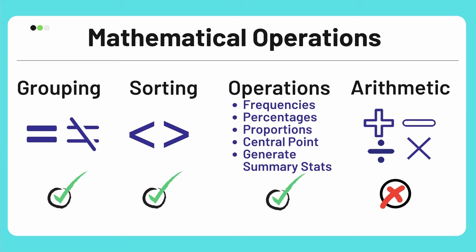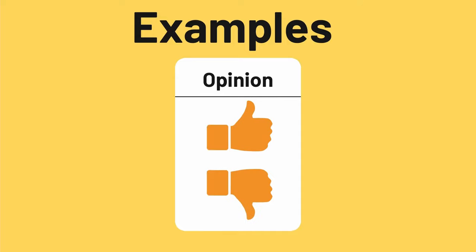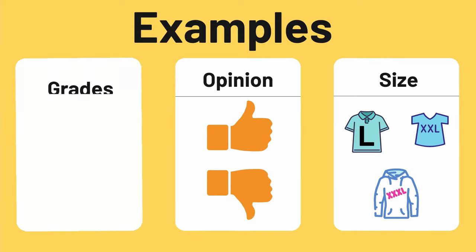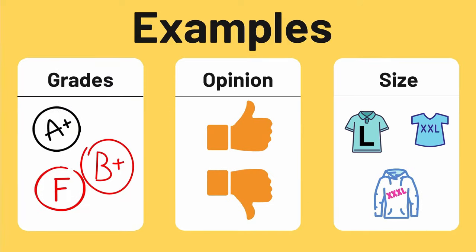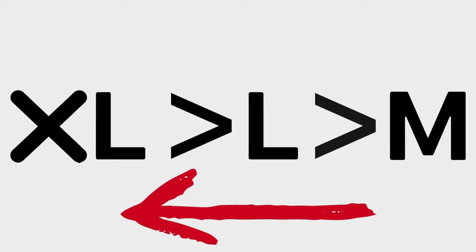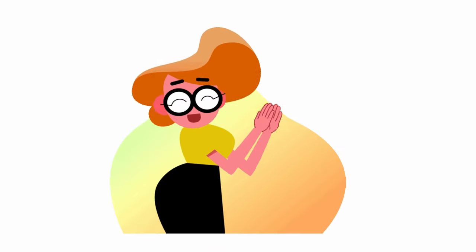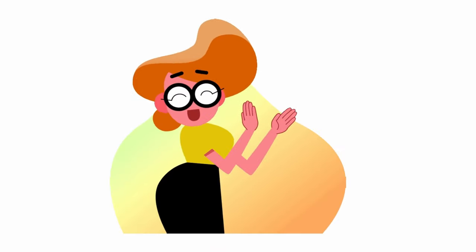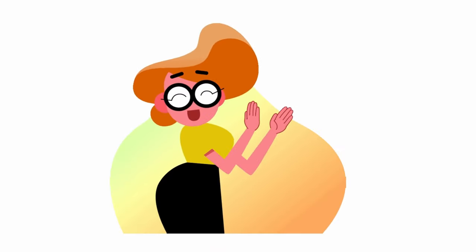No other mathematical operations like addition or multiplication are possible on ordinal data. Examples include opinion, size of clothes, and grades. As you can see, this data can be ordered — extra-large is always greater than large, which is greater than medium. Hence there is some hierarchy in this type of data.